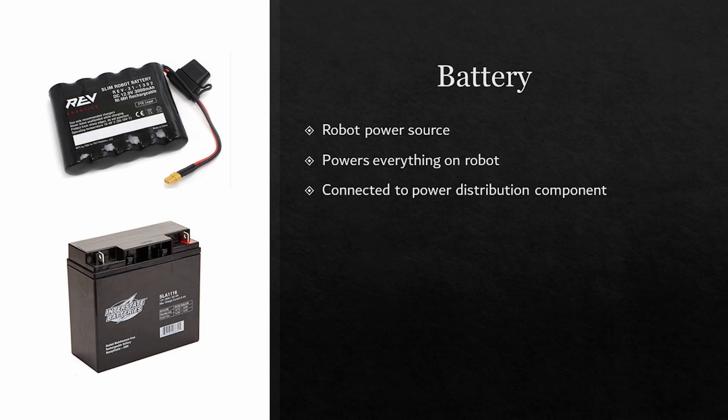The battery is connected to the power distribution component of the robot. The top battery is an FTC battery, while the bottom battery is what FRC robots use.